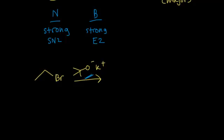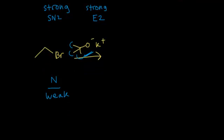Alkoxide anions are generally strong nucleophiles. However, this is a very bulky nucleophile. These methyl groups decrease the nucleophilicity because of increased steric hindrance. So that makes this a relatively weak nucleophile since it's sterically hindered. That decreases the likelihood it's SN2, because SN2 reactions require strong, sterically unhindered nucleophiles.